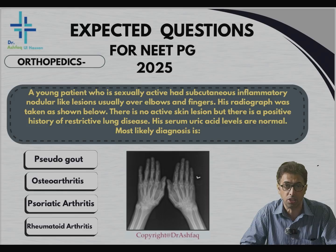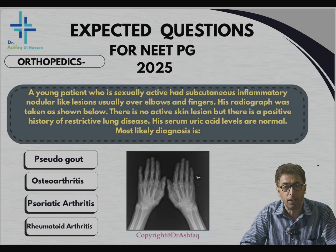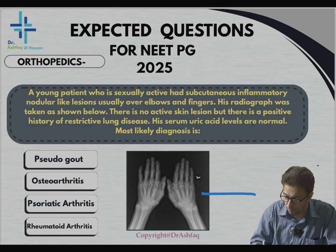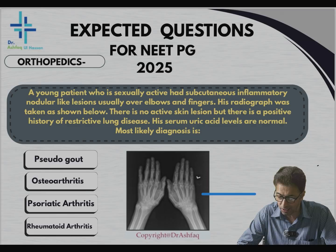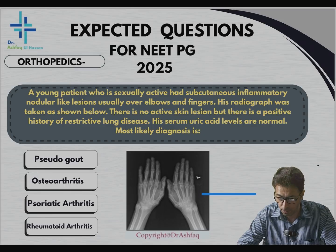A young patient — the patient is young, which is a clinical relevance — who is sexually active, had subcutaneous inflammatory nodule-like lesions over the elbows and fingers. So small joints as well as large joints are involved. The radiograph was taken, which is shown. There is no active skin lesion, but there is a positive history of restricted lung disease.